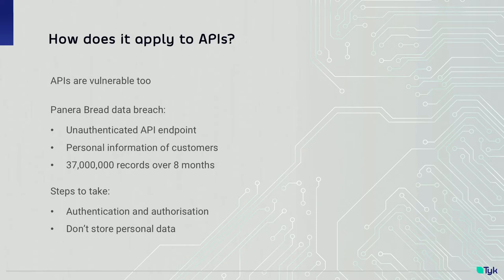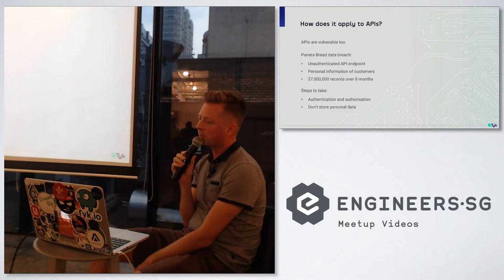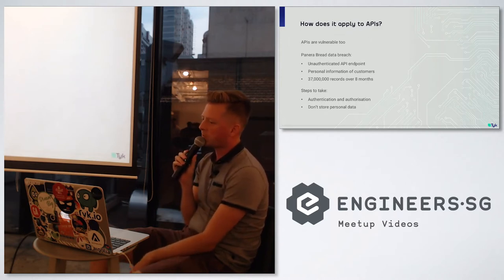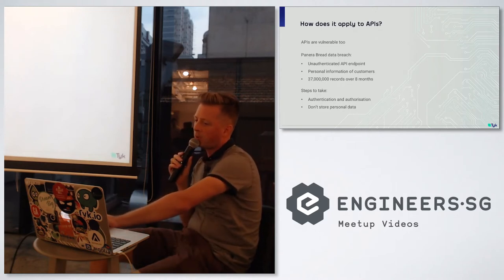So what approaches can be taken to prevent such breaches? In the Panera Bread case, requiring the API request to authenticate would have been a good start. Then beyond that, authorizing requests as well, and also not storing personal data in the first place if they can avoid it. When we talk about limiting access to servers and APIs, authentication and authorization are often discussed together — but they define who you are and what you're able to do. Authentication is the process through which a client proves their identity to the server, and authorization is the server controlling the actions of the client.